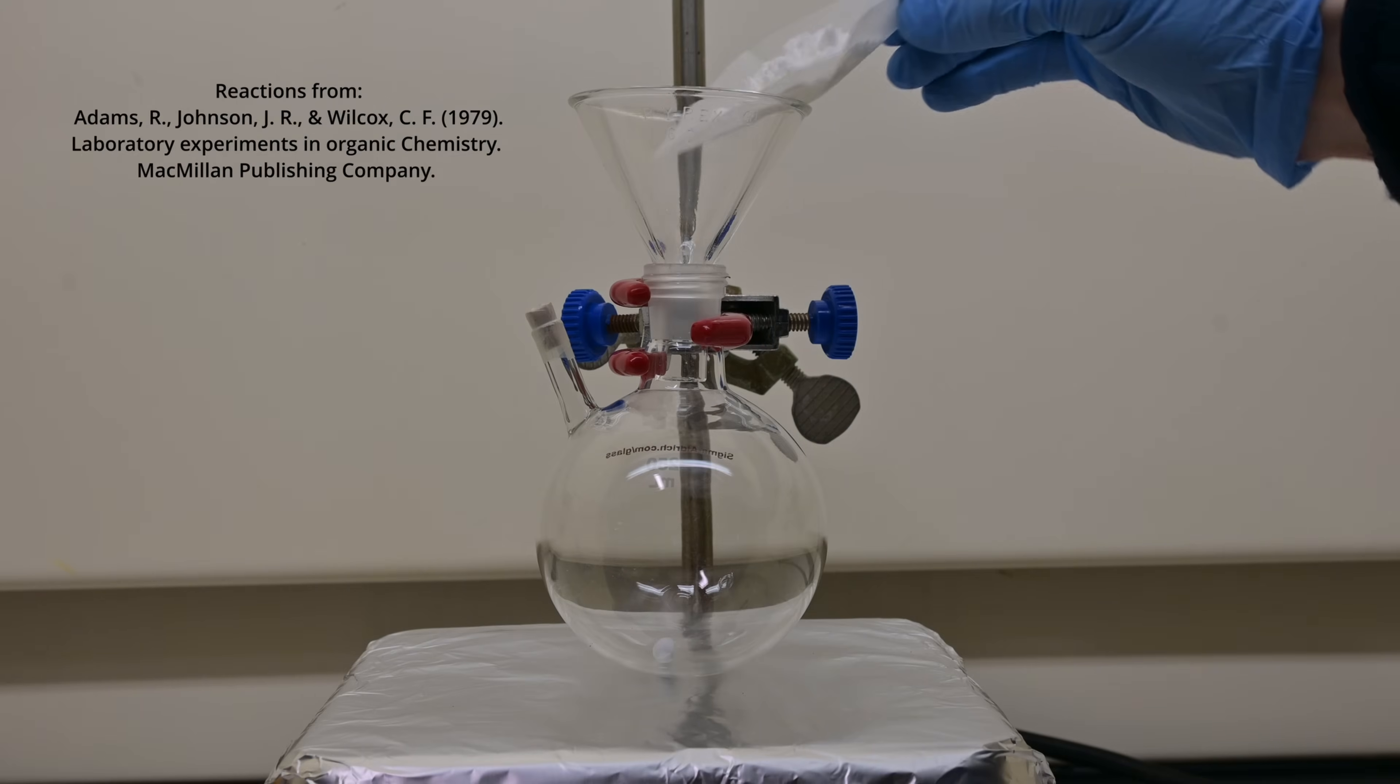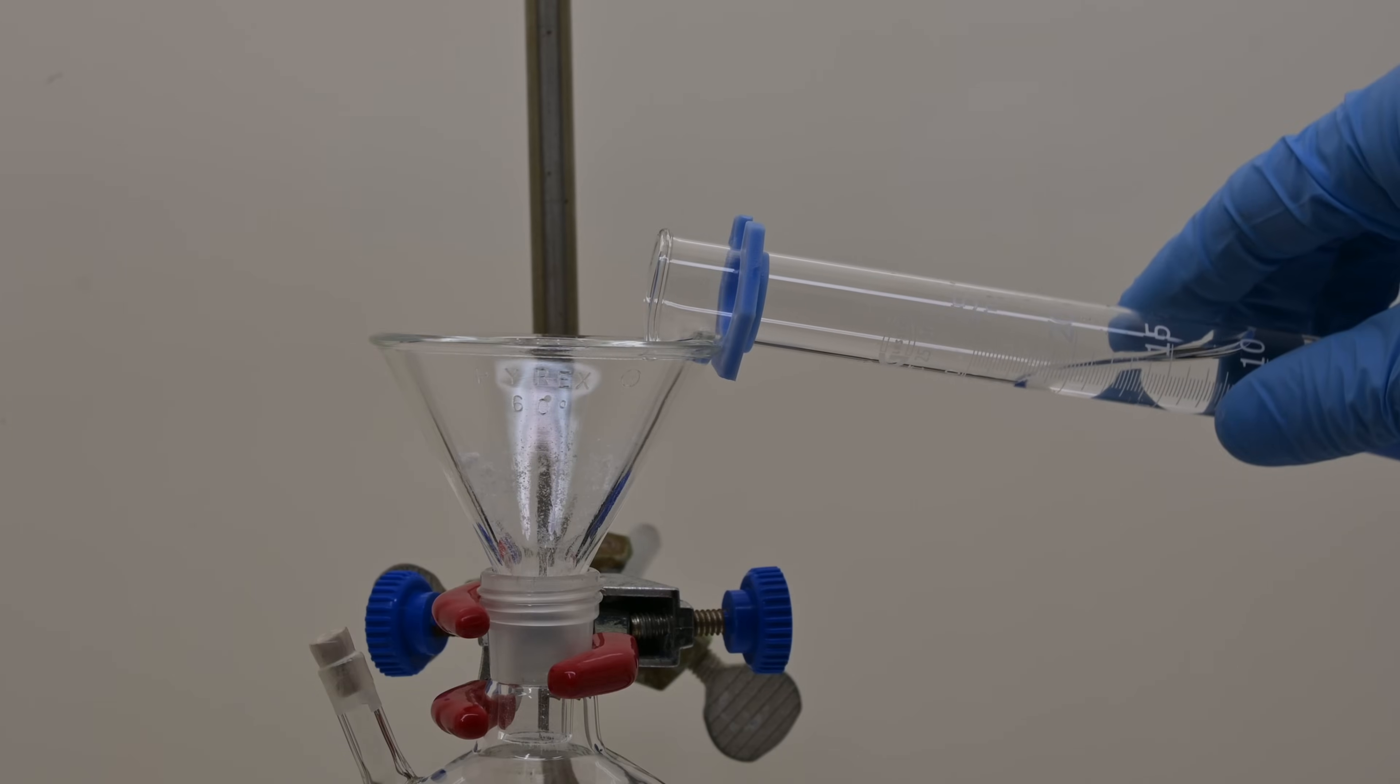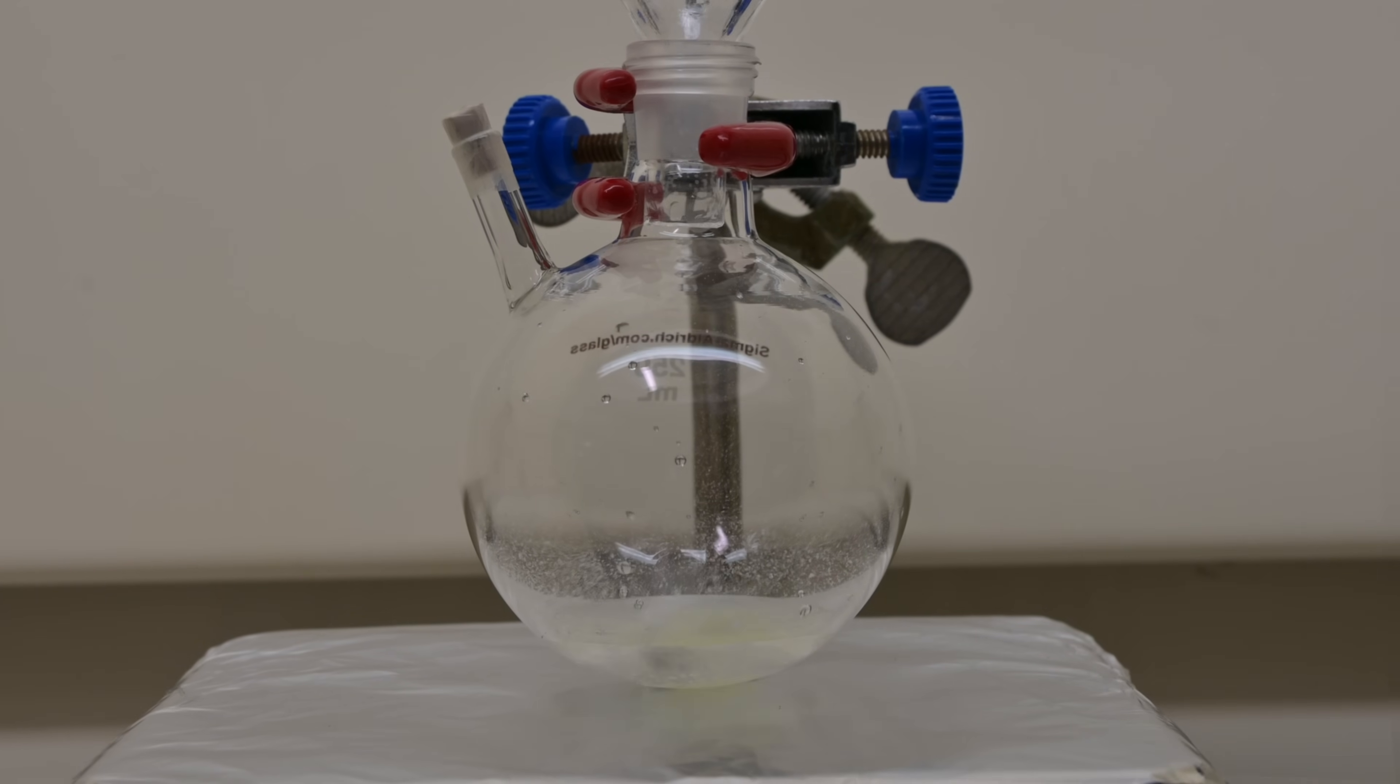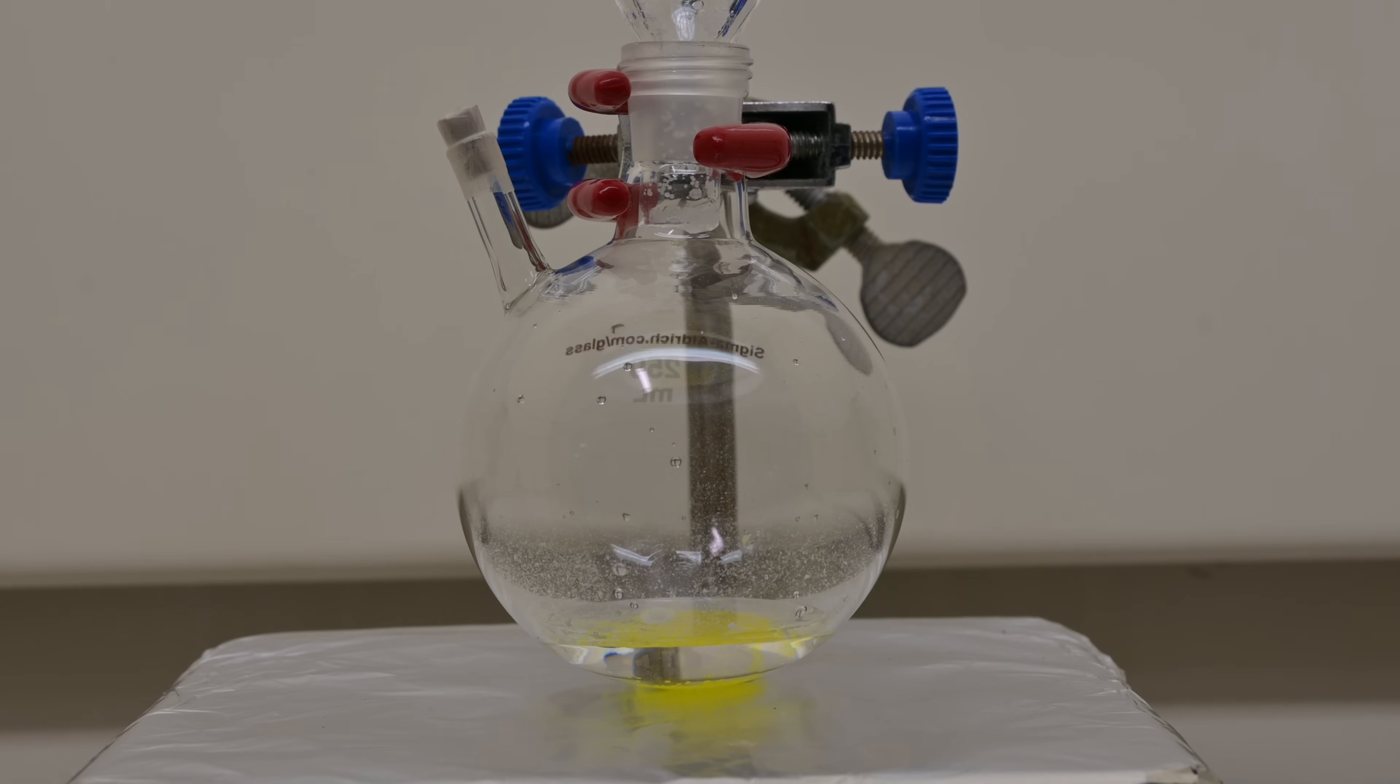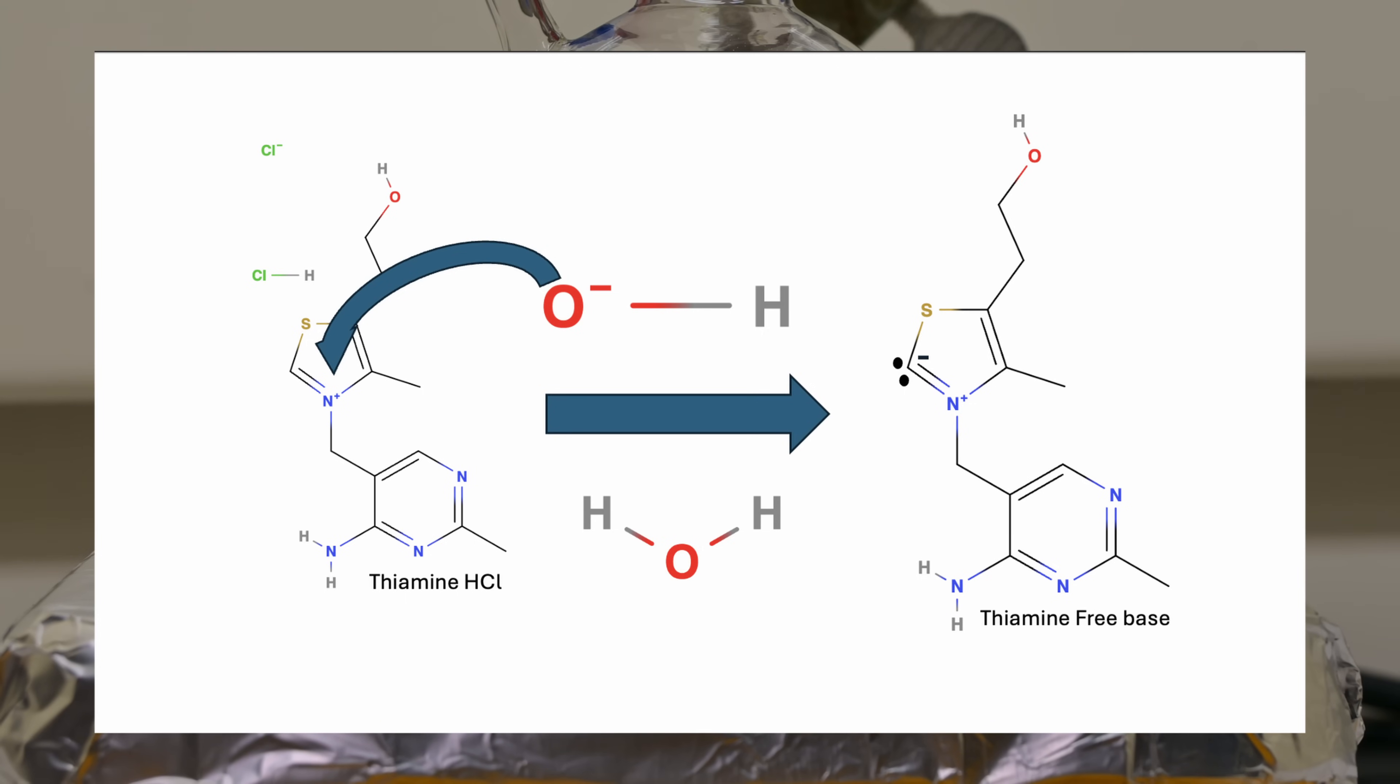The first chemical we are producing is called benzoin. We start this reaction by adding 2.7 grams of thiamine hydrochloride, also known as vitamin B1, with 6 milliliters of 10% aqueous sodium hydroxide into a 250 milliliter round bottom flask. This step converts the thiamine hydrochloride into a more reactive base form. The sodium hydroxide reacts with the HCl, preparing it for the next step of the reaction.